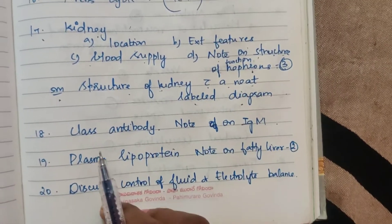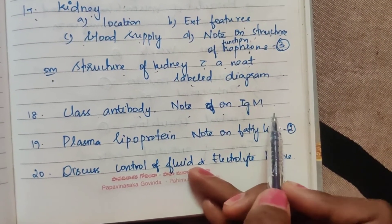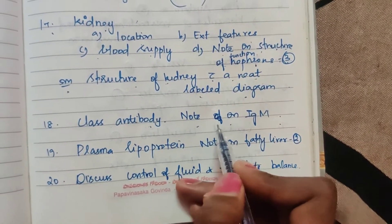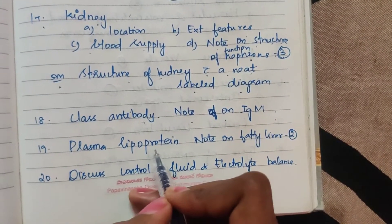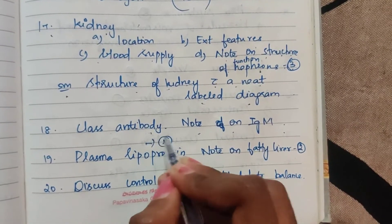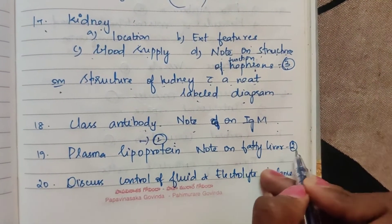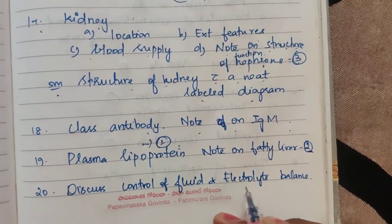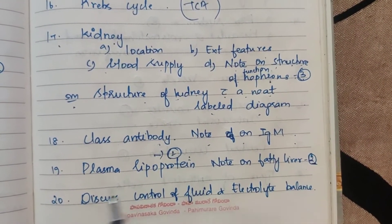Classify antibodies and add a note on IgM antibodies. Plasma lipoproteins and note on fatty liver — two times. Discuss control of fluid and electrolyte balance — this is a 15-mark question.